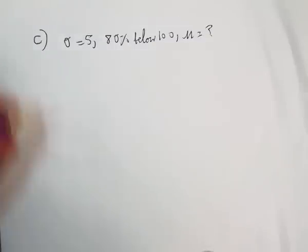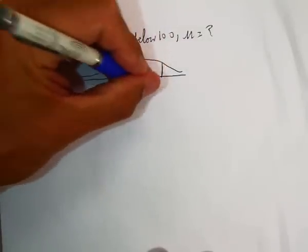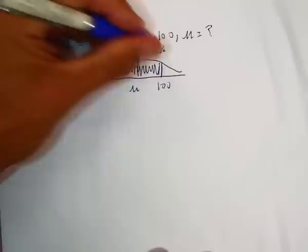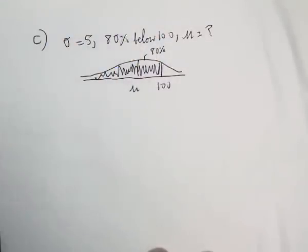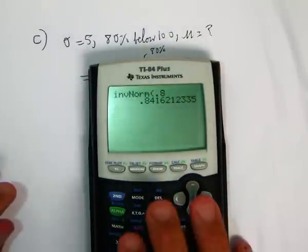Let's go to part C. What do we know in C? We know that sigma is 5 and we know that 80% are below 100, and we want to know what mu is. So we draw a picture. We don't know what mu is, but we know that 100 must be here and 80% are below that. So we've got to turn this into a z-score — this would be the 80th percentile — and that's 0.842.